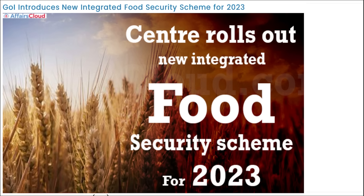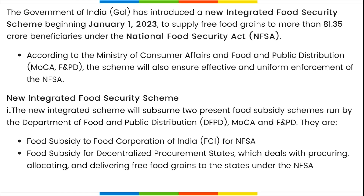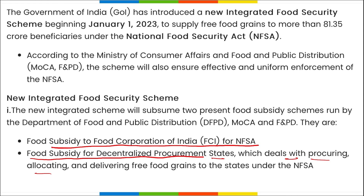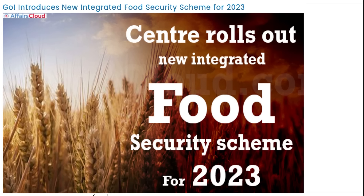The new Integrated Food Security Scheme will subsume two present food subsidy schemes run by the Department of Food and Public Distribution: food subsidy to the Food Corporation of India for NFSA, and food subsidy for decentralized procurement states. Free food grains will ensure uniform implementation and portability under the One Nation One Ration Card initiative across India.